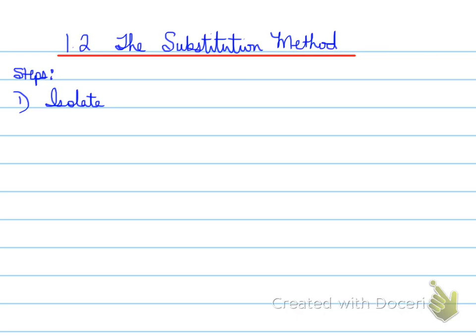Substitution is literally isolate, sub, sub, check. In order to understand what I mean by that, we need to understand what those four words mean. The first step is to isolate. We're isolating for a variable in one equation. What you're looking for is a letter that's literally almost all by itself already. Once we find that letter that's almost by itself, we make it by itself, and we've completed step number one, which is the isolate step.